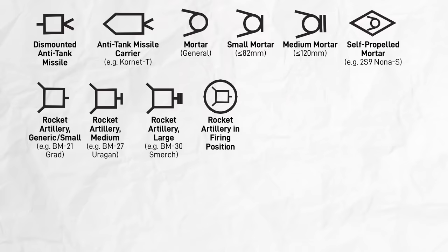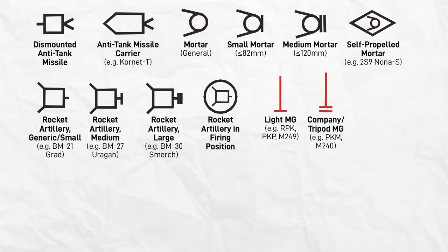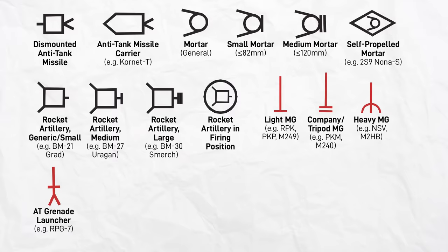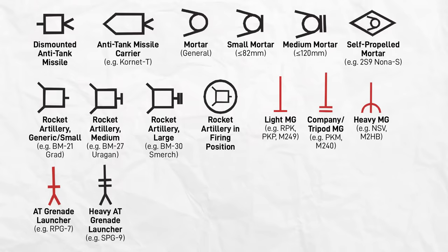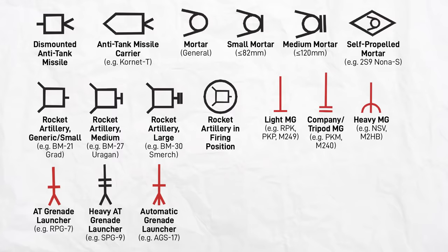As for purely dismounted weapons, machine guns are a straight line. One horizontal line at the base for a light machine gun, two for tripod-mounted general-purpose types, and a semi-circle for larger-caliber heavy machine guns. Grenade launchers are essentially machine gun plus the anti-tank arrow, with one line for types like the RPG-7, two lines for emplaced types like the SPG-9, and the big line penetrating the arrow for automatic types like the AGS-17.